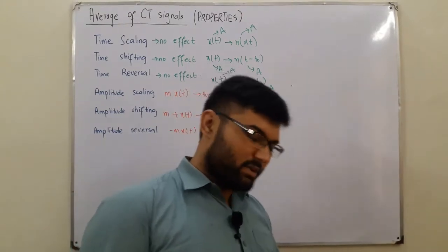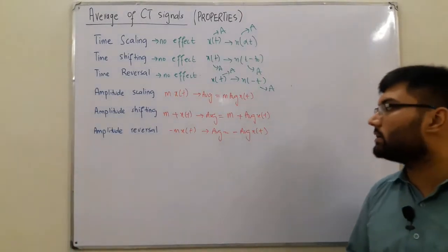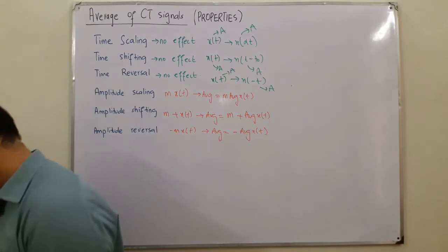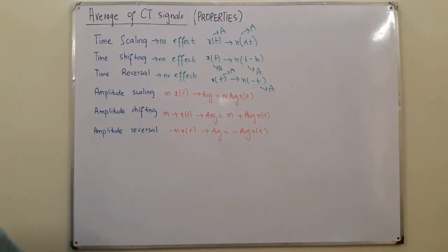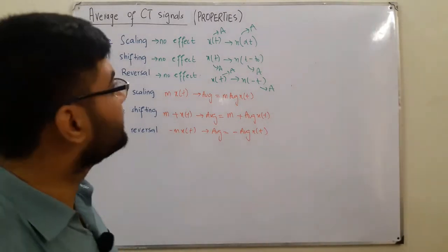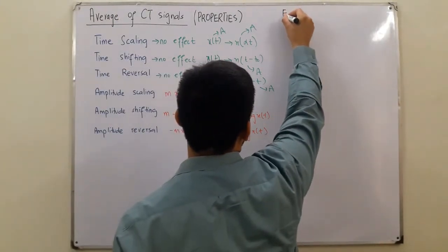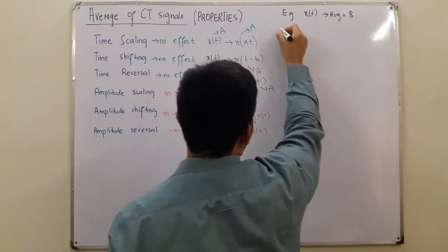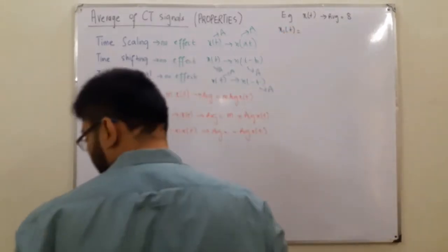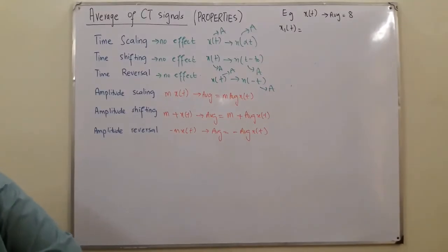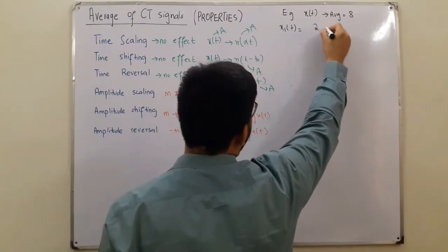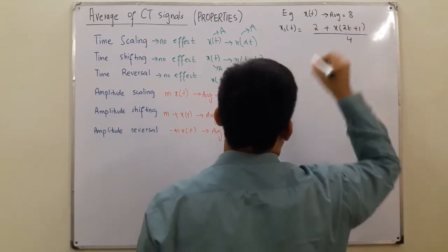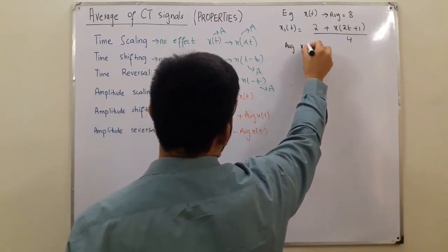I will now do one example. x(t) is a function with average equal to 8. We have another function x₁(t) = [2 + x(2t + 1)] / 4. What would be the average of x₁(t)?